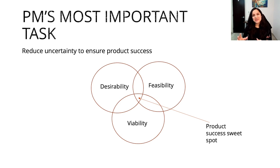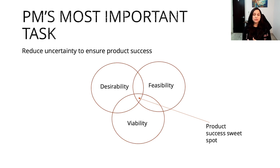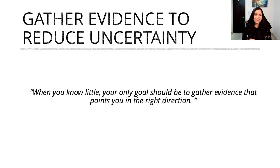To build a successful product, it's really important that you are working with an idea or pain point that customers actually need solved — something that you can build and something that you can monetize in the future. That's why it becomes really important for product managers to minimize uncertainty and risks associated with product desirability, feasibility, and viability, and find that sweet spot at the intersection of these three. In short, how you minimize uncertainty is by gathering evidence that points you in the right direction.